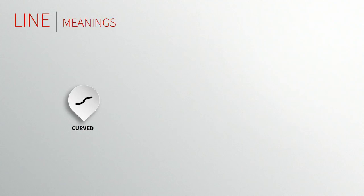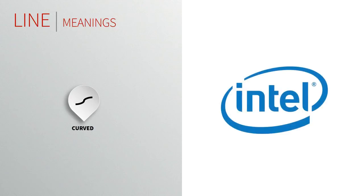Curve lines are softer than straight lines because they sweep and turn gracefully between endpoints. They're less definite and less predictable than straight lines, often used to express fluid movement. They can bend and change direction. Curve lines can be either calm or quite dynamic depending on how much they curve — the less active the curve, the calmer the feeling. You can see Intel using them to very good effect to give that fluid motion to their products.